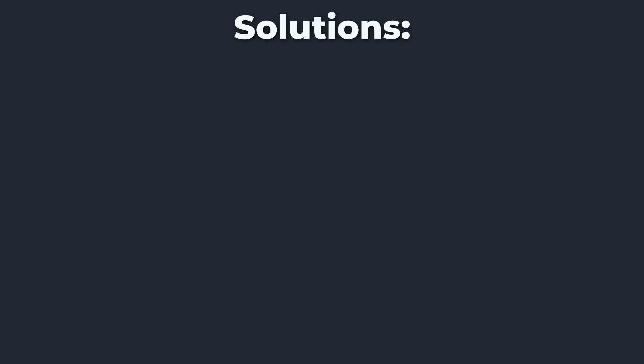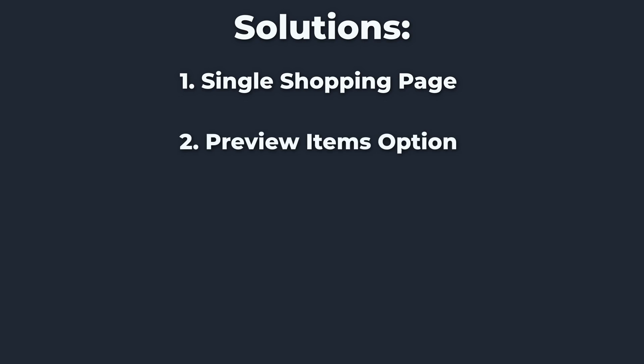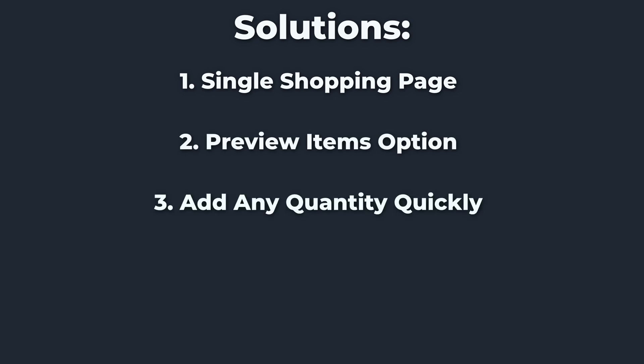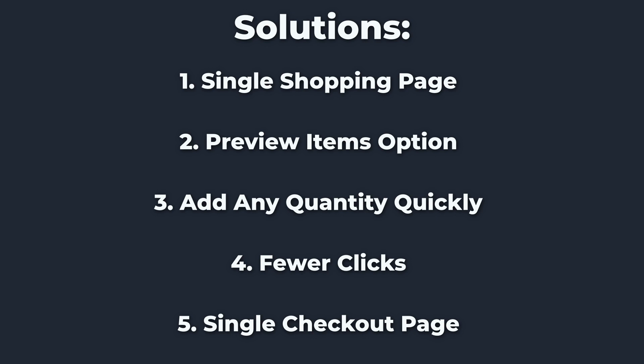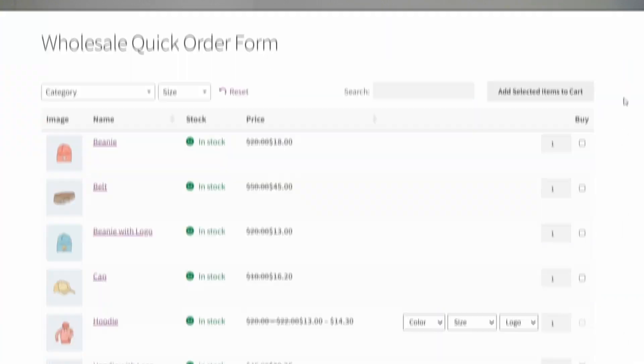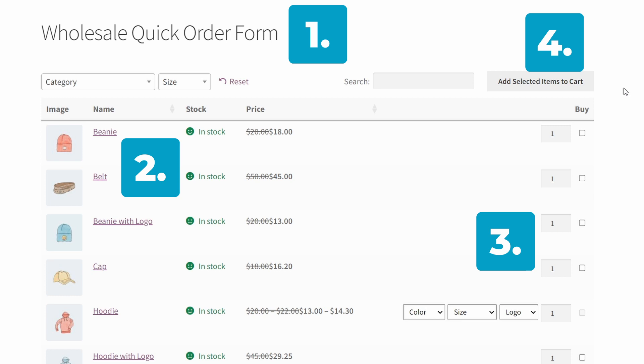So I bet you can see where I'm going with this. Our list of solutions begins with keeping the clients on the same page. They need to be able to preview items, add them to their cart all at once, in small or large quantities. And ideally do all of this, including the checkout, with as few clicks as possible, maximizing efficiency and time saved. And that's what I mean when I say the solution is intuitive. What we're looking for is best described as an order form, which packs all the features that we just mentioned into a single ordering page.